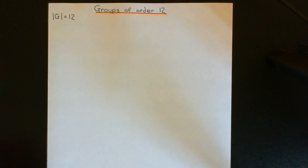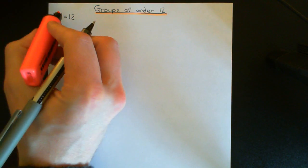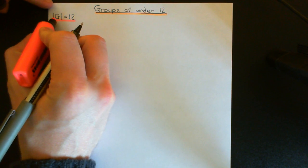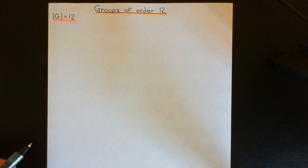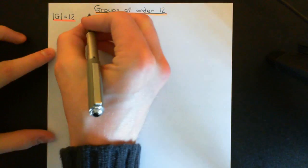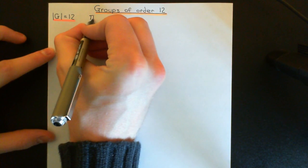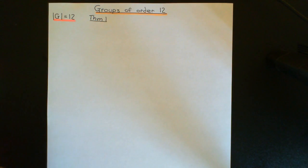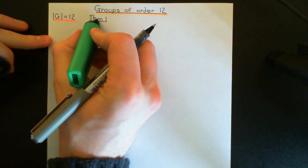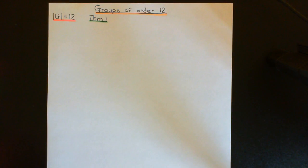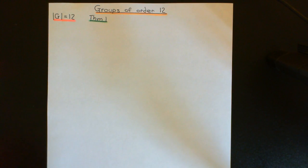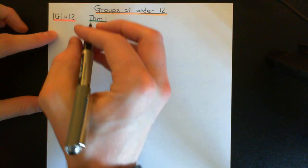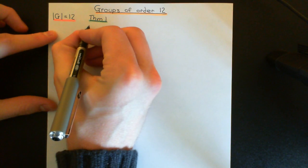What I'm going to do straight away is give you the major claim of this video — the major theorem that we want to see about groups of order 12. We'll call this Theorem 1, and the entire video will really be dedicated to proving this theorem. Theorem 1 is that this group of order 12 either has only one Sylow-3 subgroup, or it's isomorphic to the alternating group on the set of four elements.